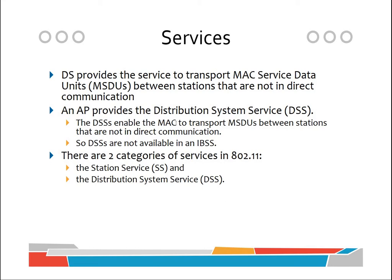Distribution system services (DSS) are not available in an IBSS, since there is no access point and therefore no connection to the DS. Without an access point there is no internet connection, and an IBSS cannot communicate with another BSS. There are two categories of services in 802.11: station services and distribution system services.